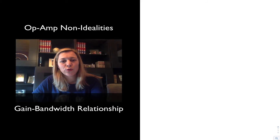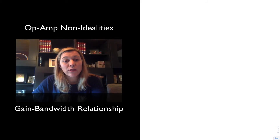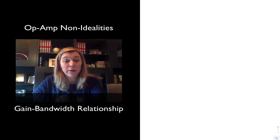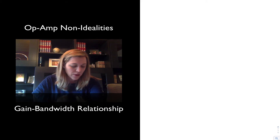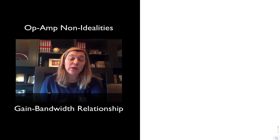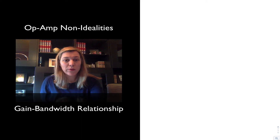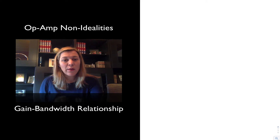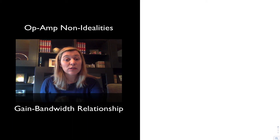In this video, we're going to talk about the relationship between gain and bandwidth for an amplifier. We're going to start by remembering that for an ideal op amp, we always assume the open loop gain is, number one, infinity. But number two, another ideality that we are assuming is that the gain is constant for any frequency.